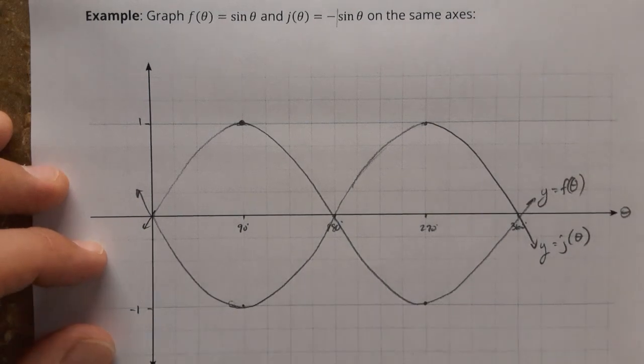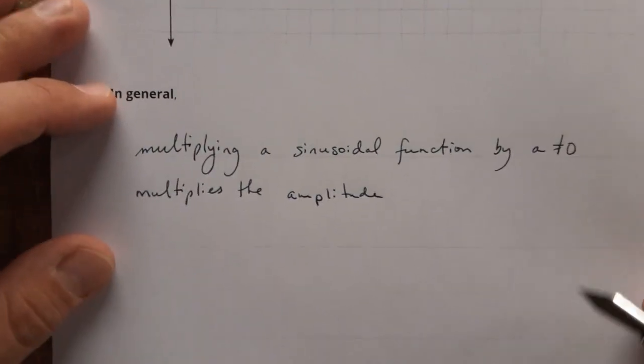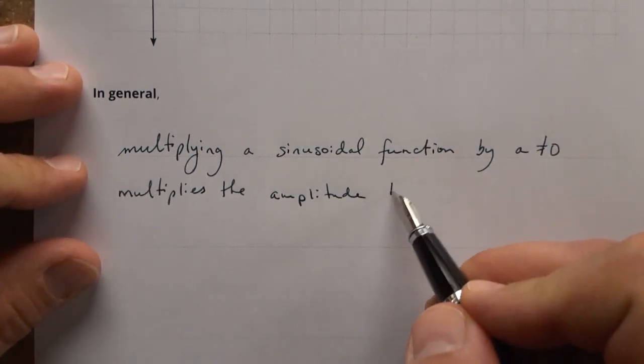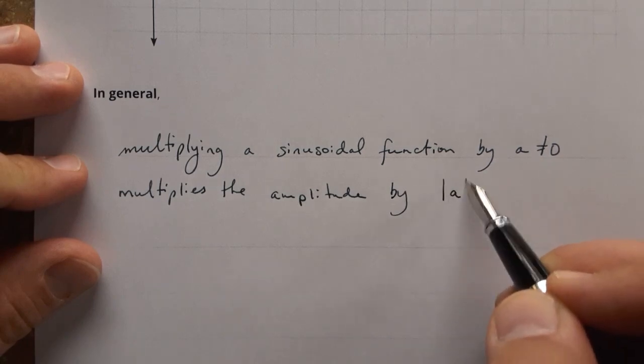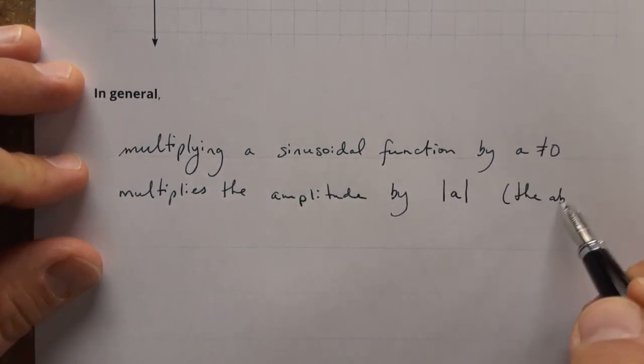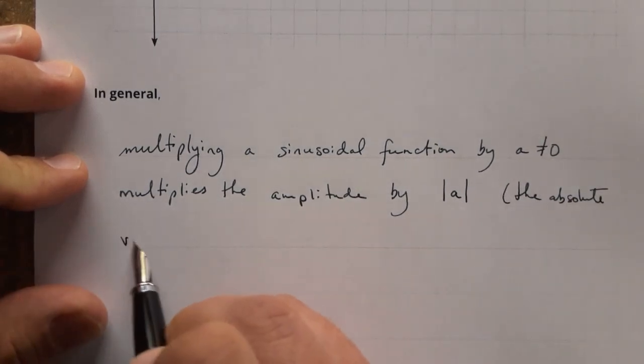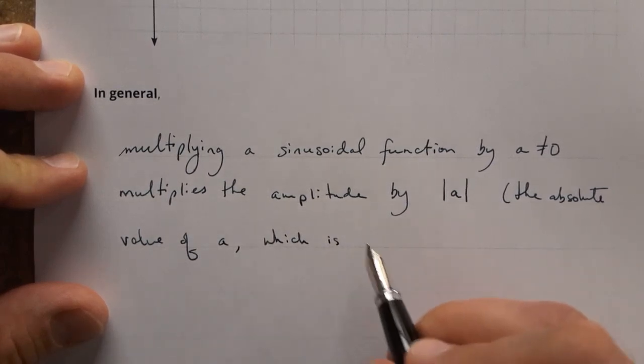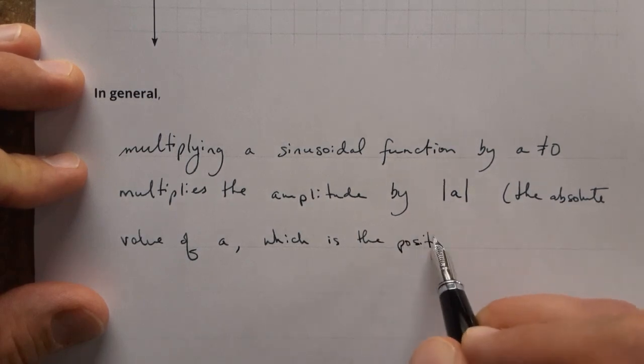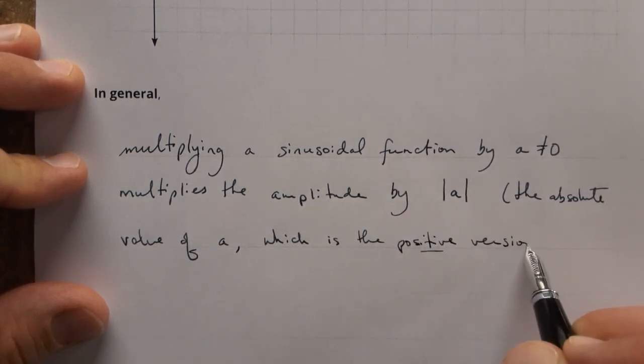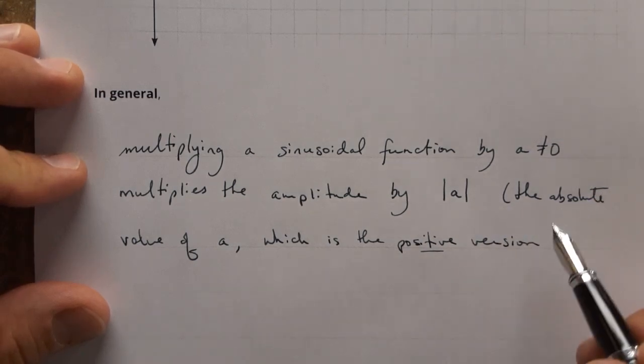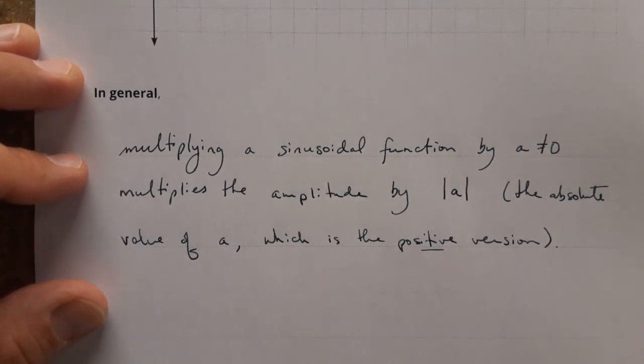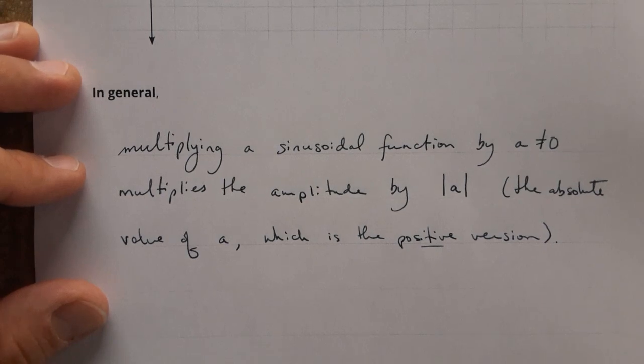Even though we had a multiplication here the amplitude was not affected because we went between the same maximum and minimum values just at different places, different times. So multiplying the sinusoidal function by a value like a, it multiplies the amplitude by not exactly a but by the absolute value of a, which you can think of as the positive version of a. If a is positive then absolute a is the same as a but if a is negative then the amplitude is changed by multiplying by the positive version. So in our last example a was negative 1 the amplitude was just multiplied by 1.